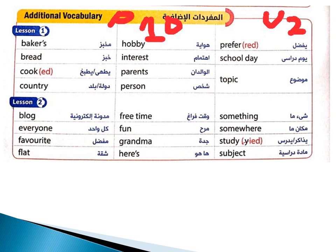فلات - شقق. فري تايم وسبير تايم - وقت فراغ. فن - مرح. جراندما - جدي. هير إز - ها هو، وتيجي برضو معناها تفضل.